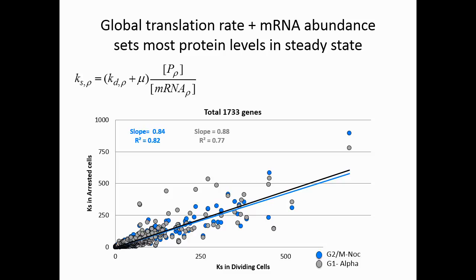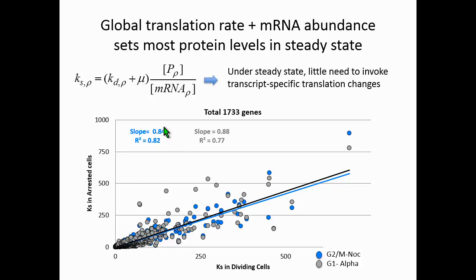The slope is slightly lower than one, indicating that the global translation rate in arrested cells is slightly slower compared to synchronized cells. The second finding is the high R-squared correlation, indicating that under steady state, protein concentration basically depends on mRNA level. So there is little need to invoke transcript-specific translation changes.